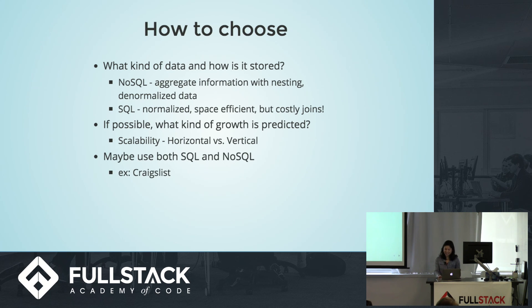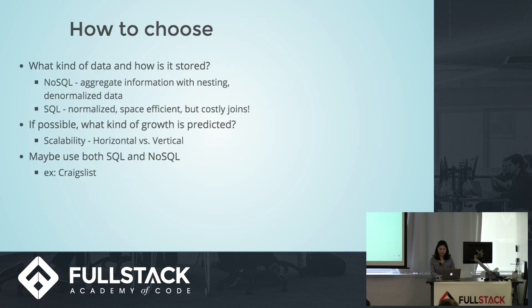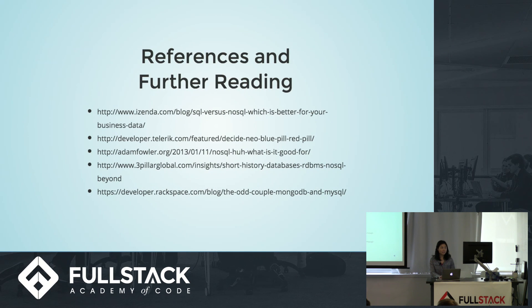An interesting case study is Craigslist, which uses both SQL and NoSQL. They use MongoDB to store their archive data and MySQL to hold active information about their current listings, managing to segment data in MongoDB to mitigate schema migration. There's no hard and fast rule for choosing one over the other, but understanding both types, what kind of data you have, and how you aim to store it is something you'll need to consider. Thanks for listening, and hope you enjoyed it.